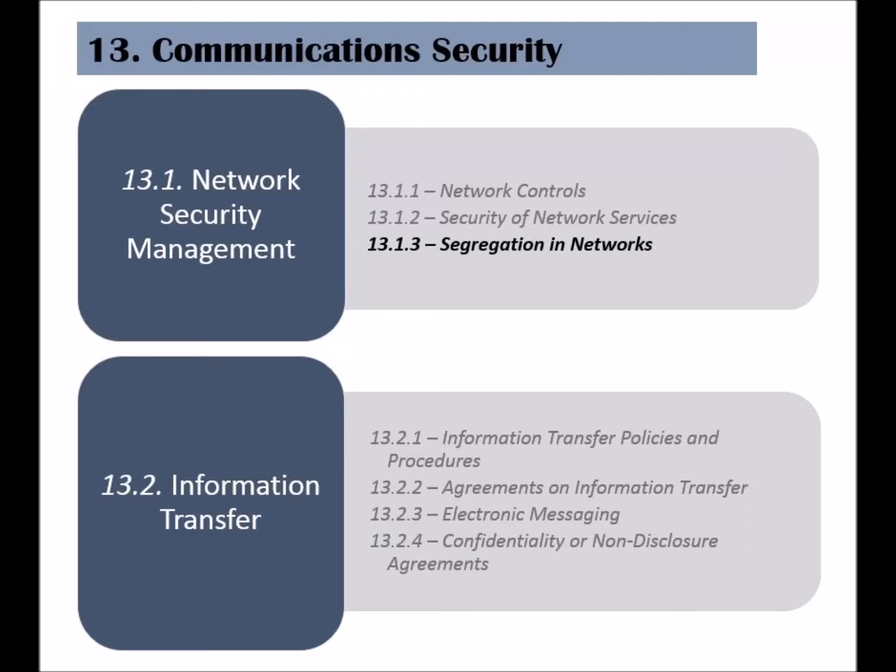The third and last control of the network security management category is called segregation in networks. To maintain separate authorization levels and access control, networks should be segregated, creating separate groups of users, systems, and information services.